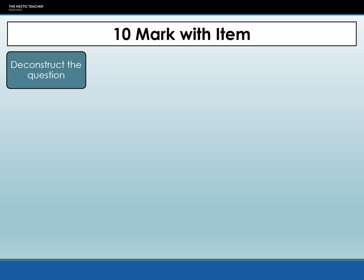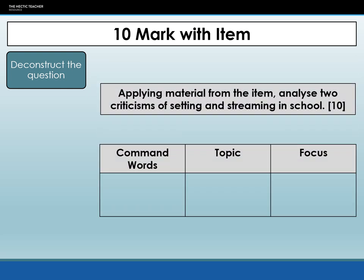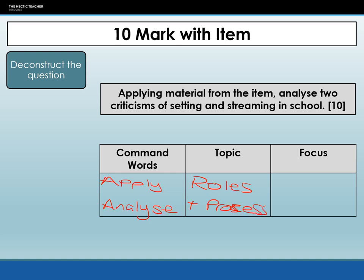Deconstructing the question — we've done this a lot already, but it's always a good idea to remind us of what we're looking for so that we can answer the question clearly and on point. Our command words are apply and analyse, meaning that we have to use the material from the item explicitly and appropriately. It's not good enough to just identify the criticisms and chuck something in from the item hoping it will be relevant. Our topic is roles and processes.